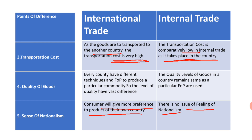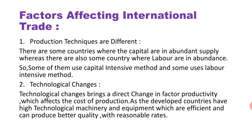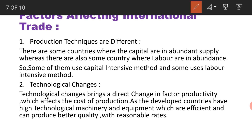These are five differential points — in the book there are seventeen or eighteen points but we will take only five to give an idea. Now we move to the next slide: factors affecting international trade. The first factor is that production techniques are different.